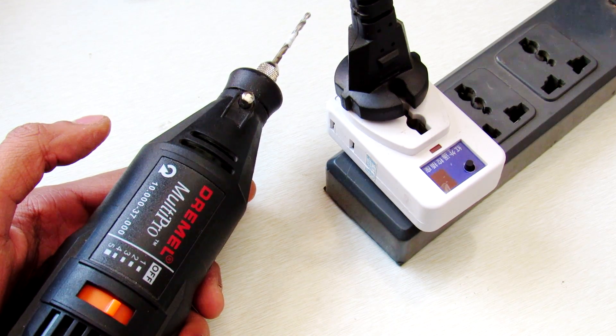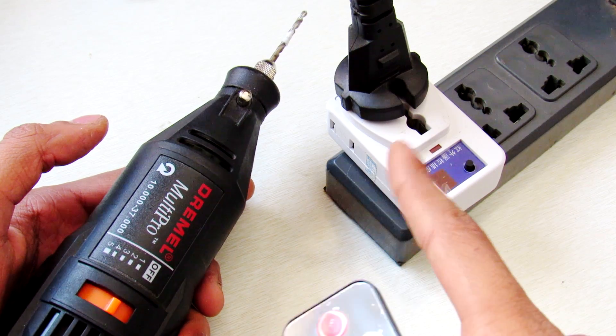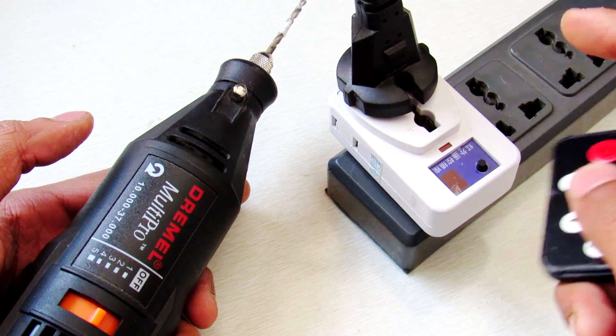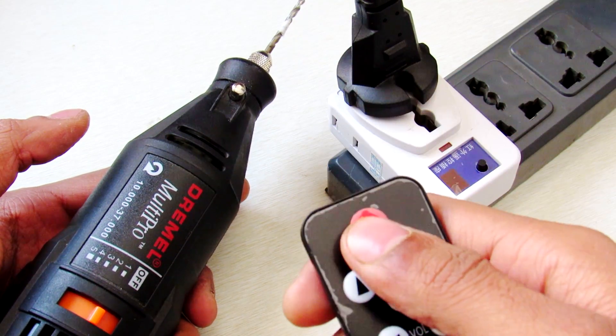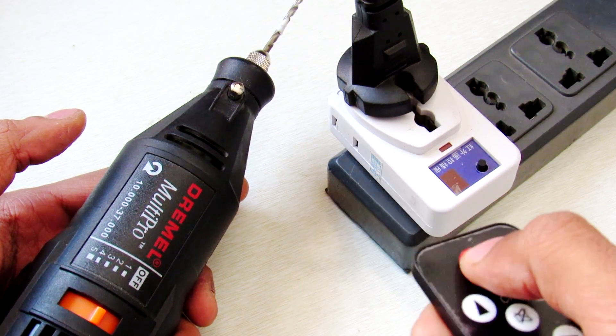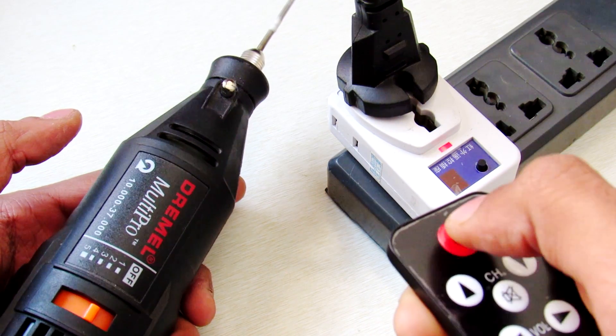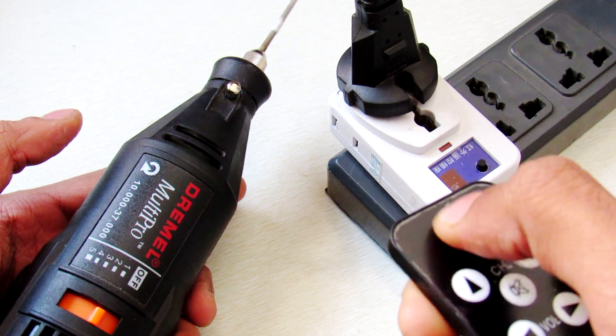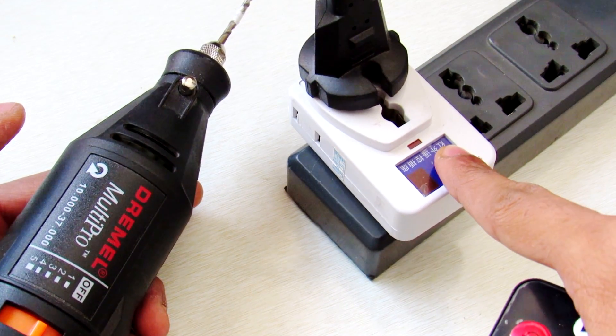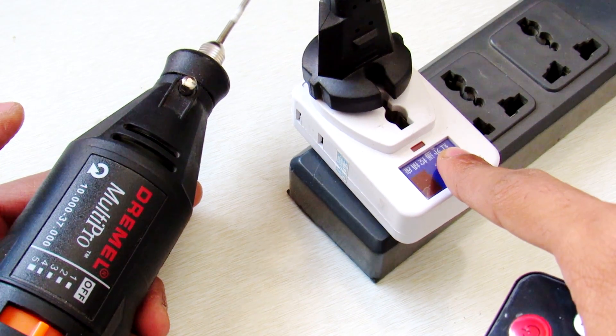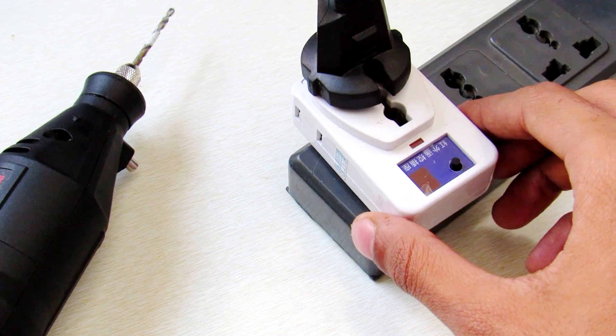Hey what's going on guys, it's Keda here. Many times you need to remote control your AC outlet, so here is the AC IR switch connected to my Dremel tool. Now I can turn it on and off using this remote control, and it can also be done manually by this button. So let's take a look at this IR switch.